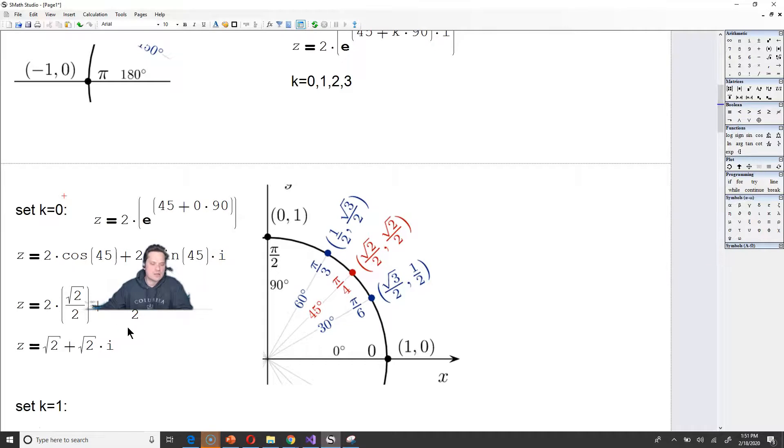Let's move on. So let's go with the first stage. Set k equal to 0. So z equals 2 times e to the 45 plus 0 times 90. That's the same as just doing 2 times the cosine of 45 plus 2 times the sine of 45i. According to the unit circle, at 45 degrees or pi over 4 radians, the x is the root of 2 over 2. That's the cosine part. And the y is the root of 2 over 2. That's the sine part. So you can make replacements. Cosine of that value is now 2 times the root of 2 over 2.